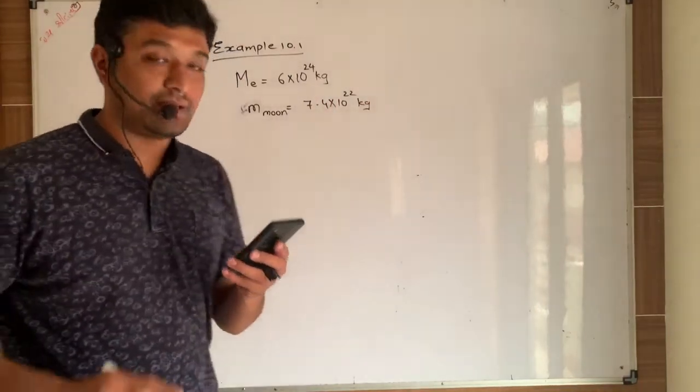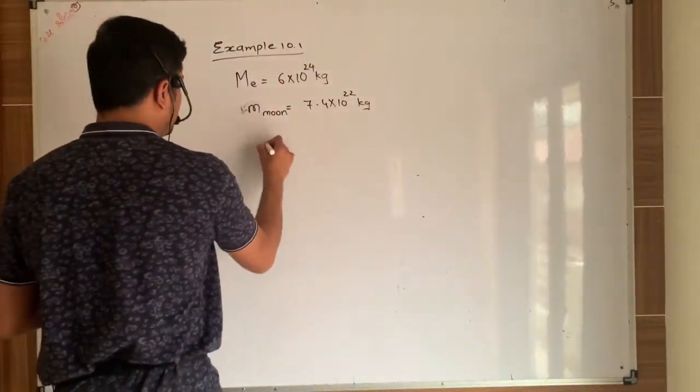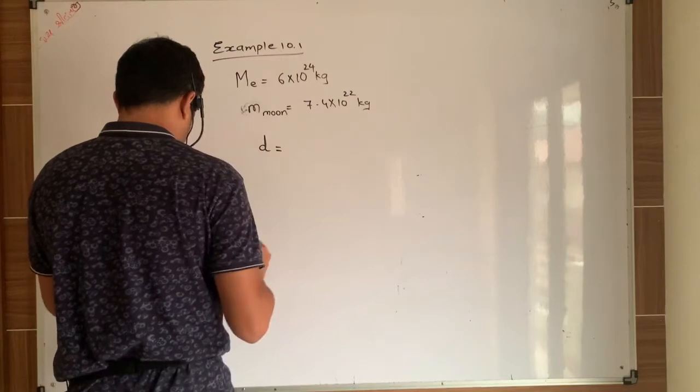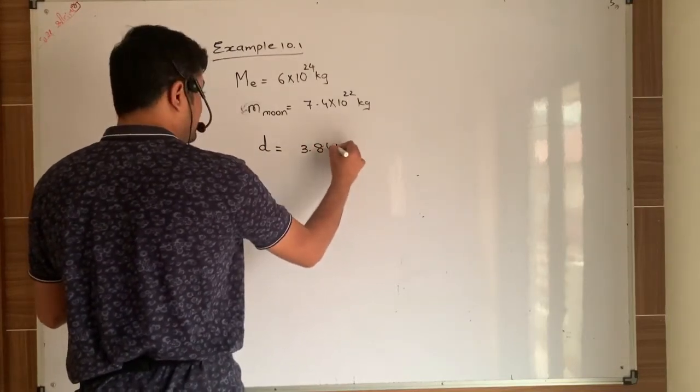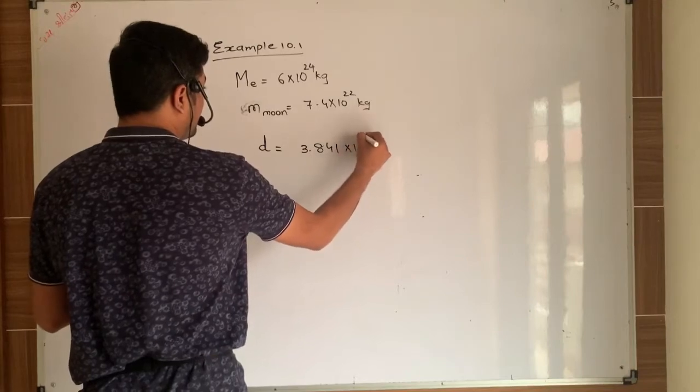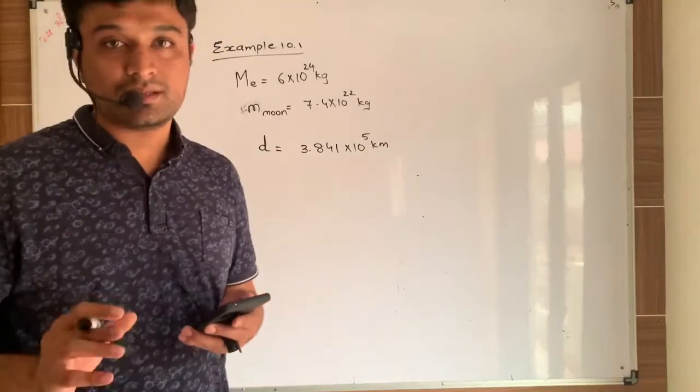And the distance between earth and moon is given in the question D as 3.84 into 10 raise to power 5 km. So each and every things are given to us.